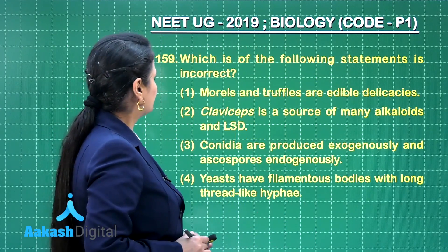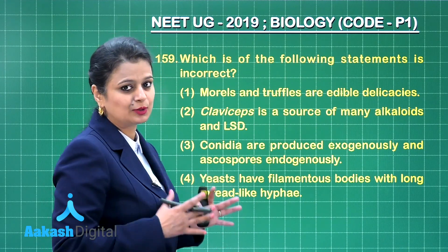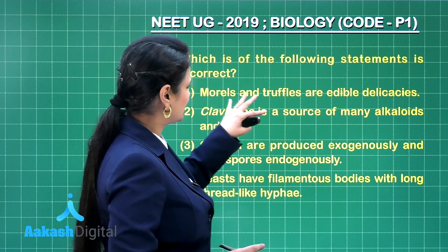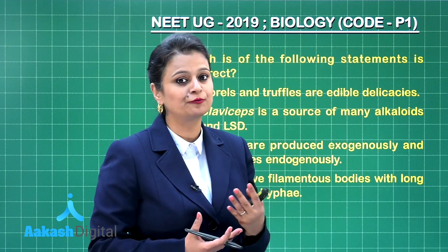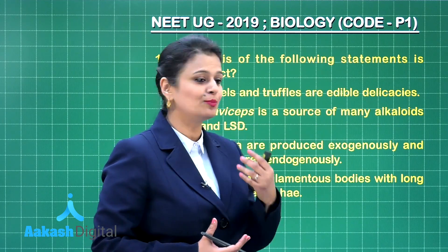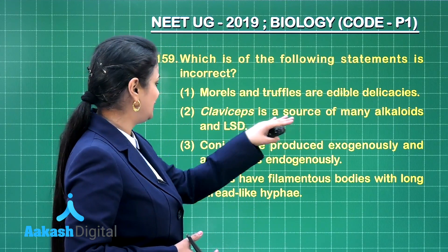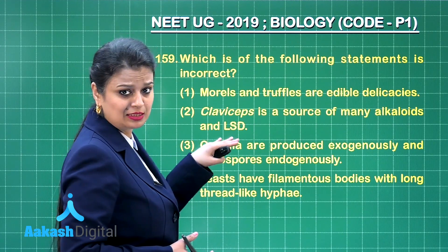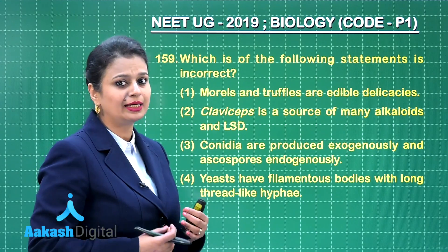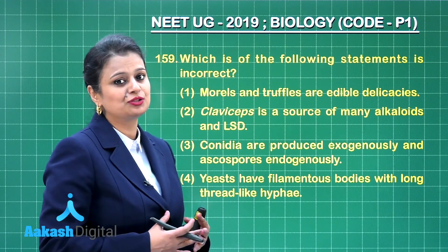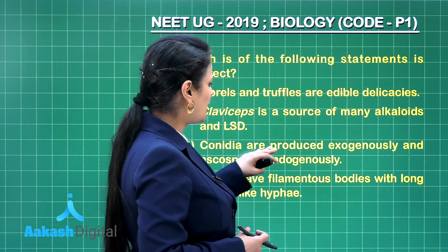Next question asks which of the following statements is incorrect, related to fungi. Morals and truffles are edible delicacies — they are fruiting bodies of ascomycetes, so that is correct. Claviceps is a source of many alkaloids and LSD (lysergic acid diethylamide), which is used as a hallucinogen — that is also correct.